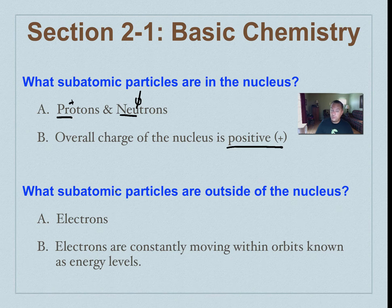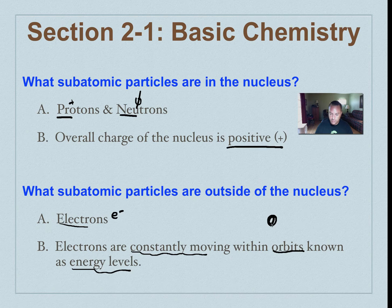So what subatomic particles are on the outside of the nucleus? Well, those are going to be your electrons. Now, electrons, remember, they have a negative charge, and they're constantly moving. And they're going to move in orbits. Remember those orbitals that we saw going around in that previous graphic. But we really call those energy levels. So we're going to redraw it here. So there's our nucleus. We're going to put our electrons on the outside.